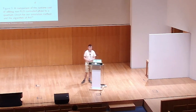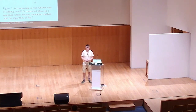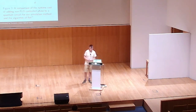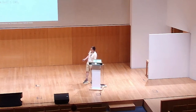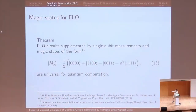[Audience question]: Is there some subset of universal gates which is in the intersection between FLO and Clifford, or Clifford-plus-T and FLO-plus-nonlinear-phase-shifts, that you can use to compare the performance of the simulation? [Speaker]: Yes, there is in fact a non-trivial intersection between FLO and Clifford gates. It's explored in a paper by Sergey Bravyi from the early 2000s. And you can compare performance with it.